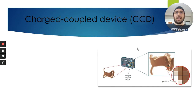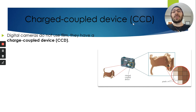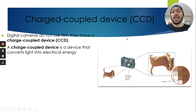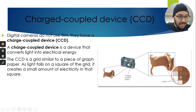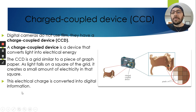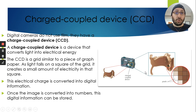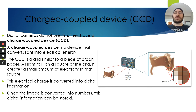We don't use film anymore. Digital cameras use something called a Charged Coupled Device, or CCD. A CCD converts light energy into electrical energy — similar to a grid of graph paper. Different colors form on those little quadrants, and this electrical charge is converted into digital information — numbers — which is how pictures are stored on phones and digital cameras.